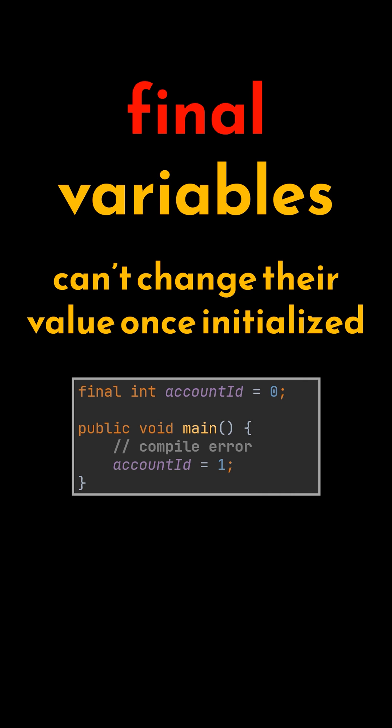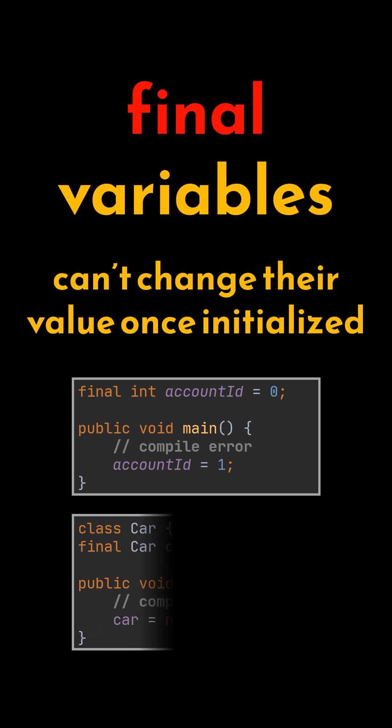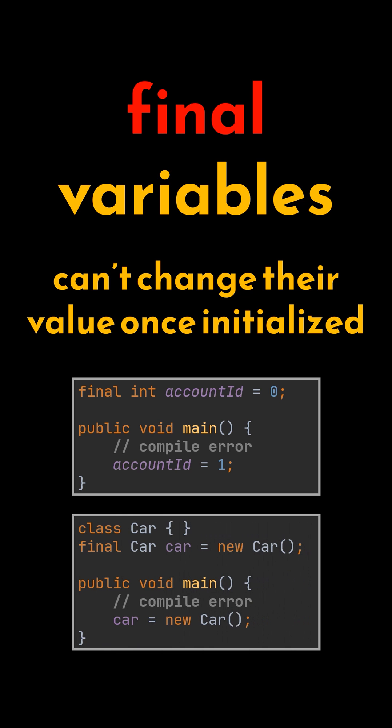This also applies to object declarations, meaning that the car variable initialized in this example cannot be assigned a new instance or another car. In other words, we can't use the new keyword to assign a new instance to this same variable.